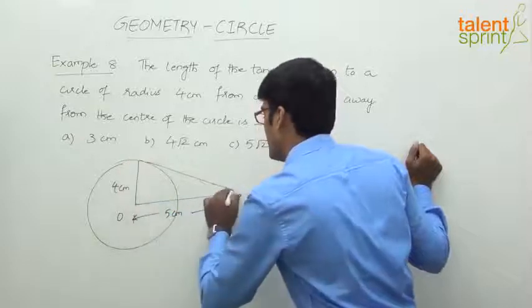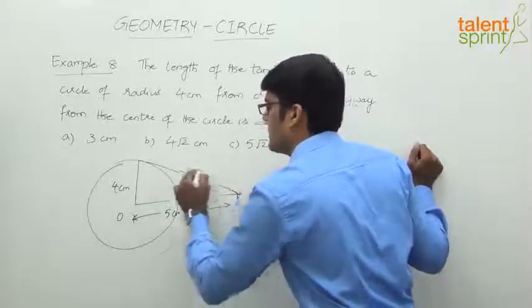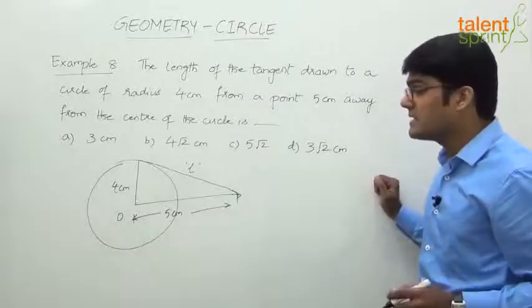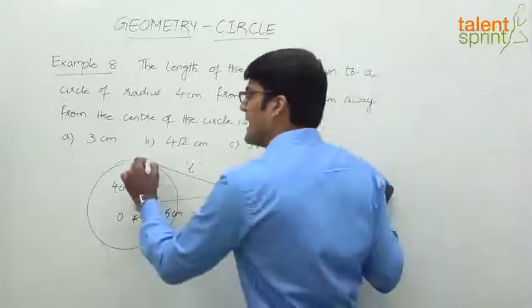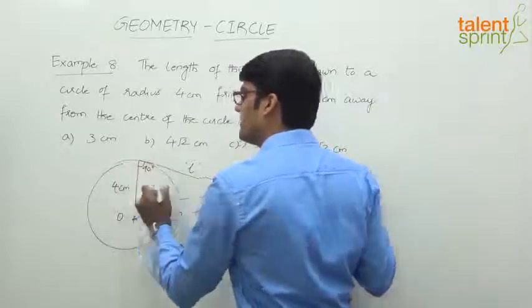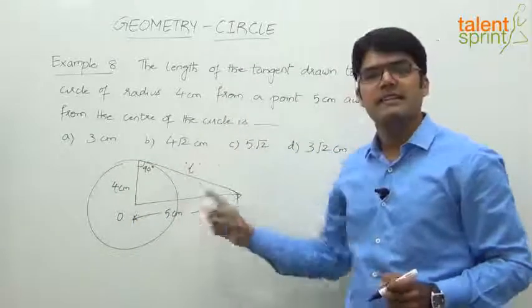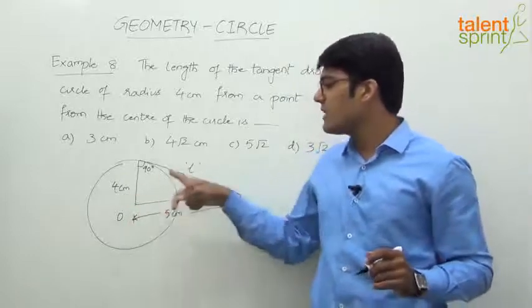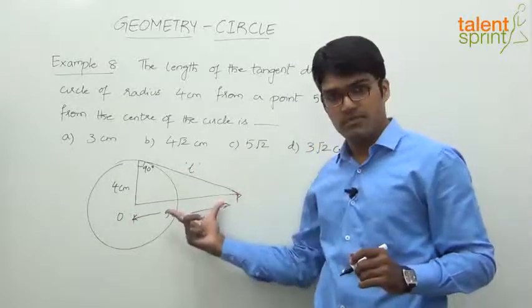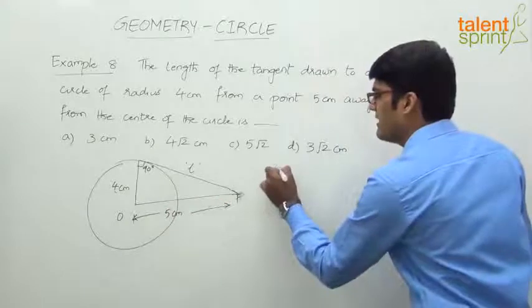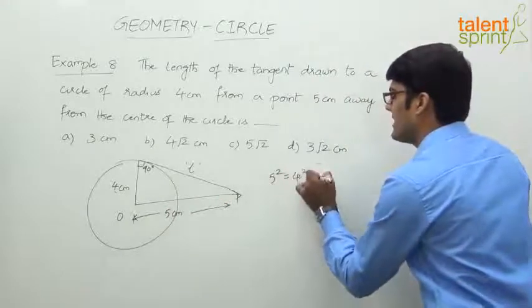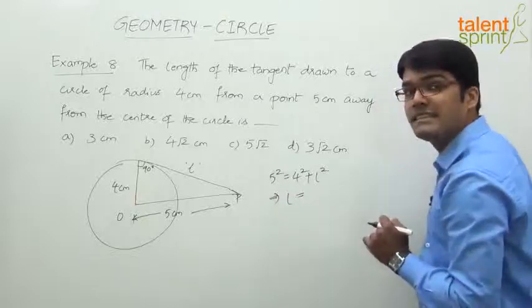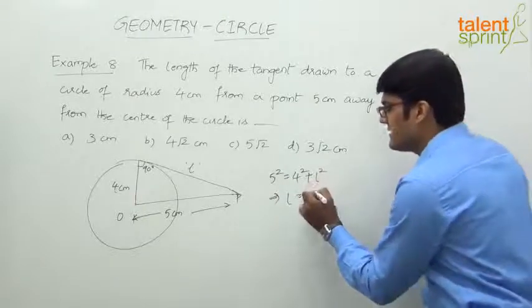We need to find out the length of the tangent, this length l. If you observe, you know that this angle is going to be 90 degrees. Apply Pythagorean theorem: 5² = 4² + l². This is the hypotenuse, so 5² = 4² + l², which implies the length of the tangent will be 25 - 16 = 9. The square root of 9 is 3 centimeters. Option a is the answer.